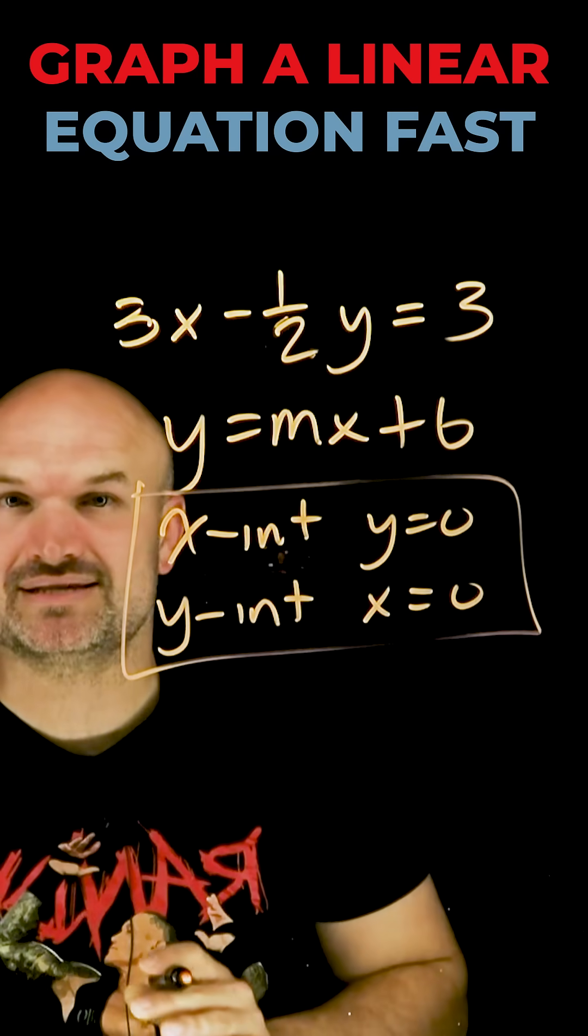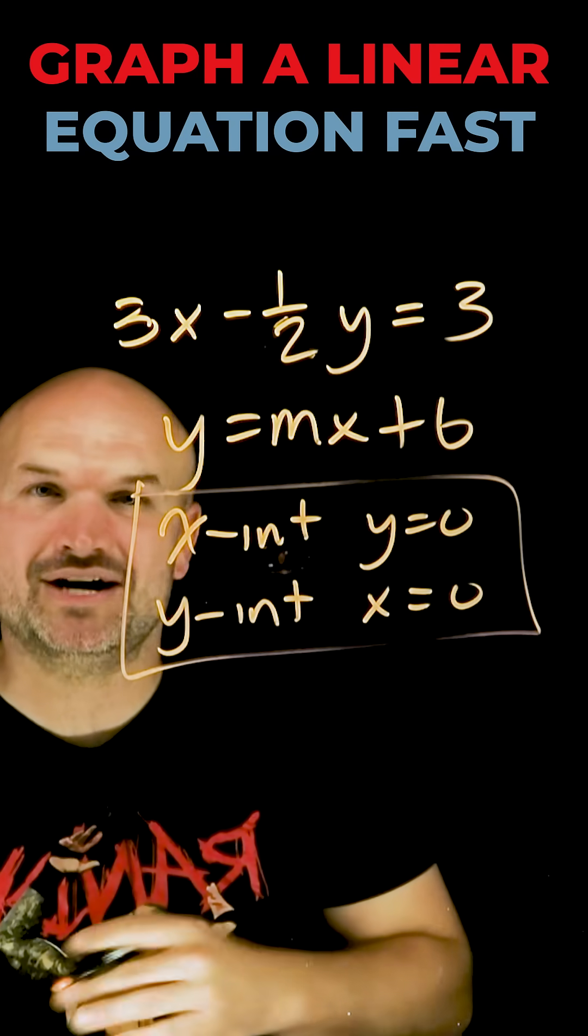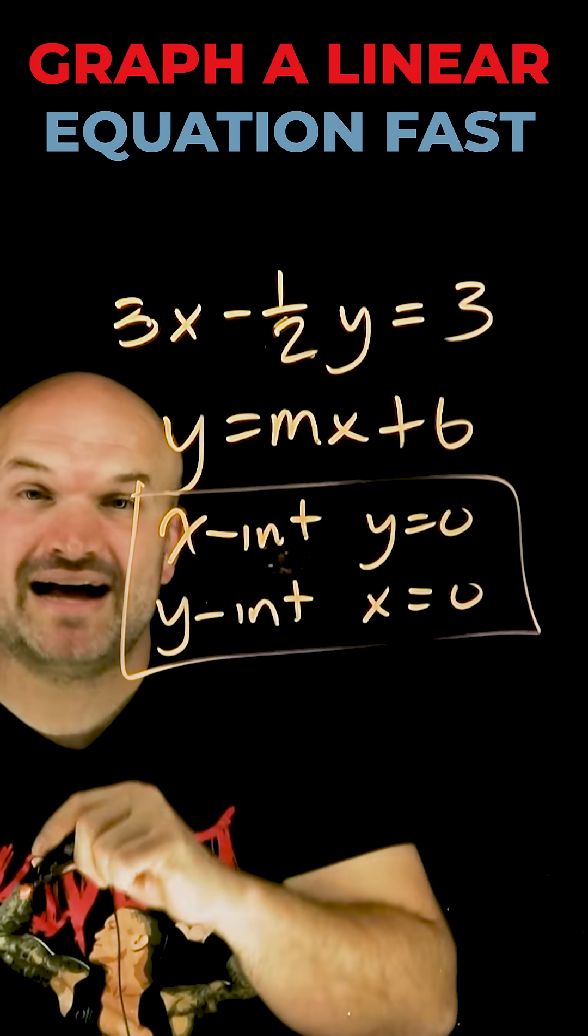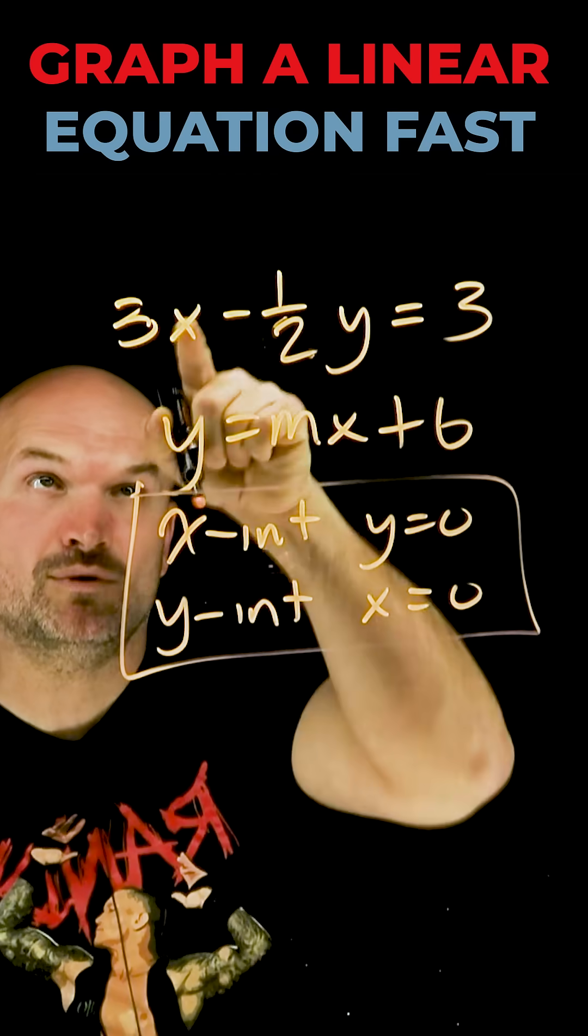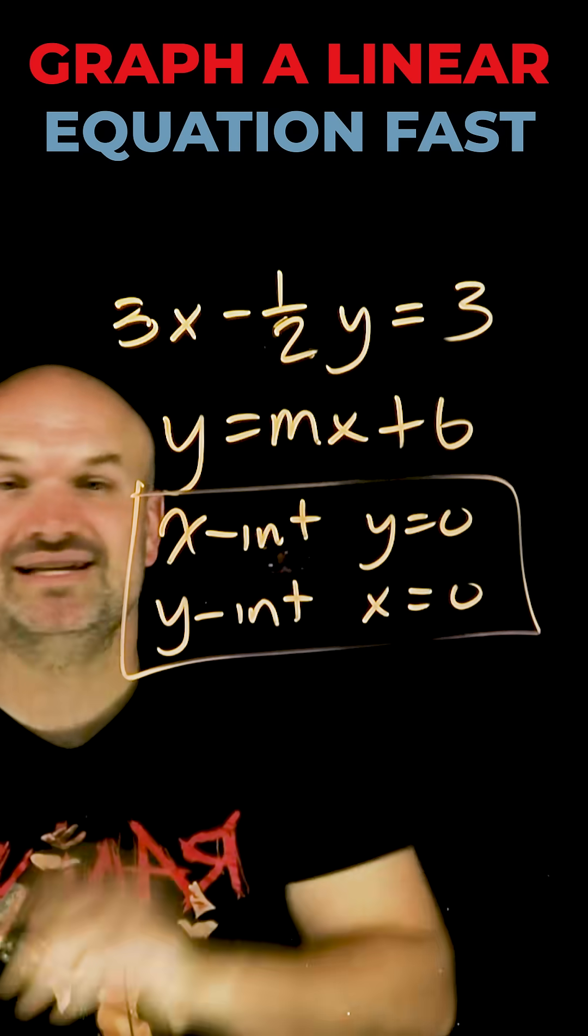Remember, to graph a line we just need two points. The fastest and easiest two points to understand of a linear equation are going to be its intercepts. So find the x-intercept by plugging zero in for y, find the y-intercept by plugging zero in for x.